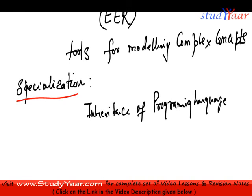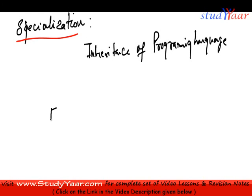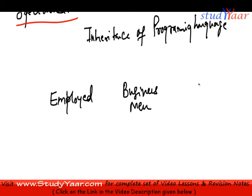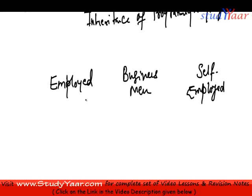Specialization basically means that in the real world, I would have certain entities which have some very specific attributes. For example, we have persons who are employed, persons who are businessmen, and persons who are self-employed. All these are basically persons, but they have some extra features because of the fact that they are either employed, businessmen, or self-employed.